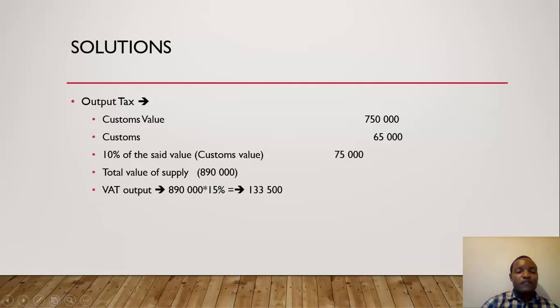Like I said, the first part that we need to think about is our output part. The output tax is what we need to first think about. The first thing we need to do is output. We said you take the Customs value, this is the Customs duty, then you take 10% of the said value. What is the said value? The said value is Customs. So 10% of that is $75,000, which gives us the total value of supply of $890,000. VAT output is calculated at 15%. Why? Because we are using the value of supply and not consideration. If you're using consideration, it's 15 over 115. If it's the value of supply, it means that amount excludes VAT, therefore it's 15%. Then your output is $133,500.